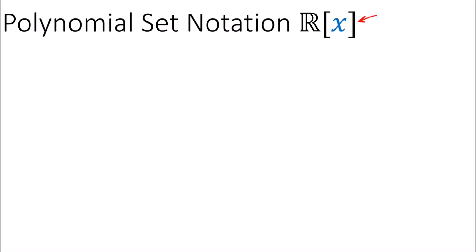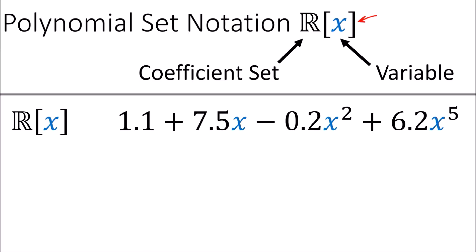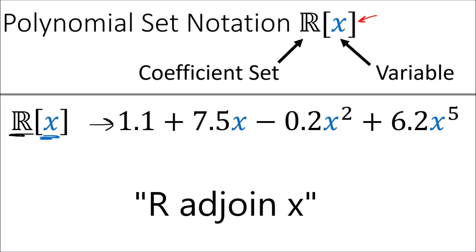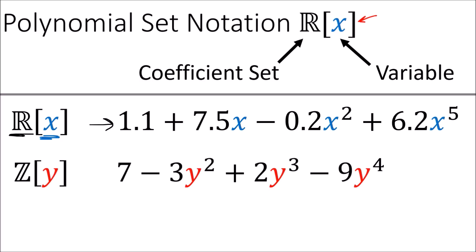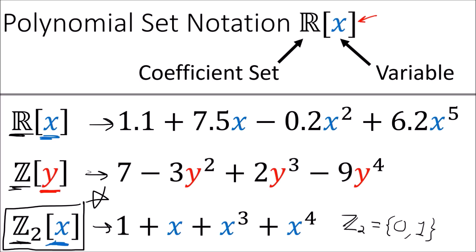When we see notation like this, we're talking about the set of all polynomials in the x variable with numbers from this set as the coefficients. So this denotes the set of all polynomials in the x variable with real number coefficients — we call this polynomial set R adjoin x. This denotes the set of all polynomials in the y variable with integers as coefficients. This denotes the set of all polynomials in x with the integers mod 2 as coefficients, so the only coefficient numbers are 0 and 1. In this video, we're mostly going to be interested in polynomials from this last set because they correspond to binary messages.